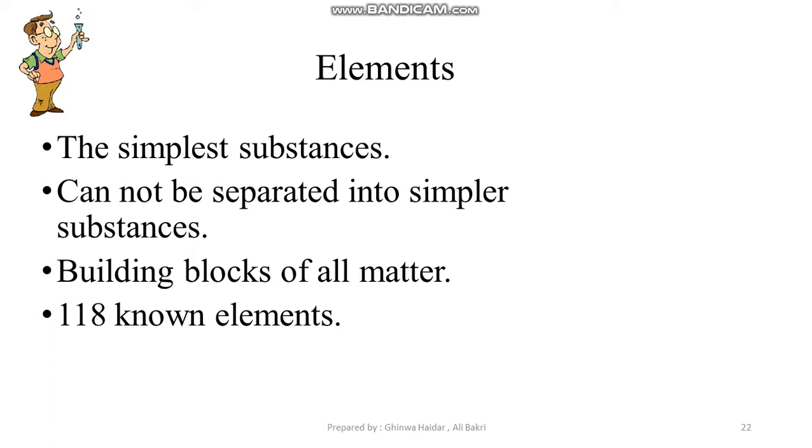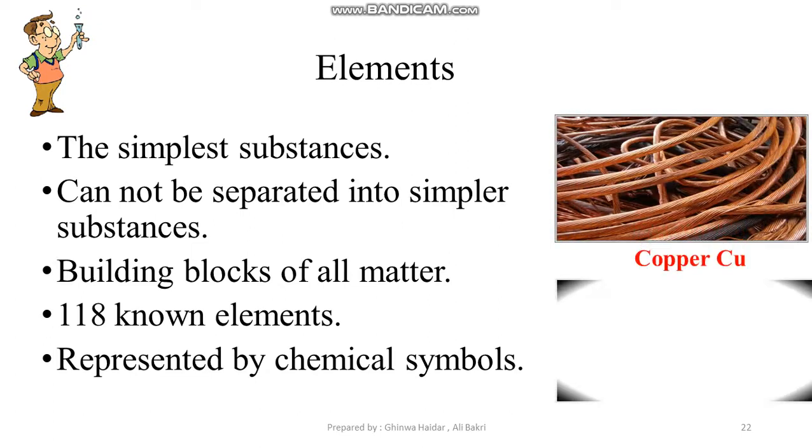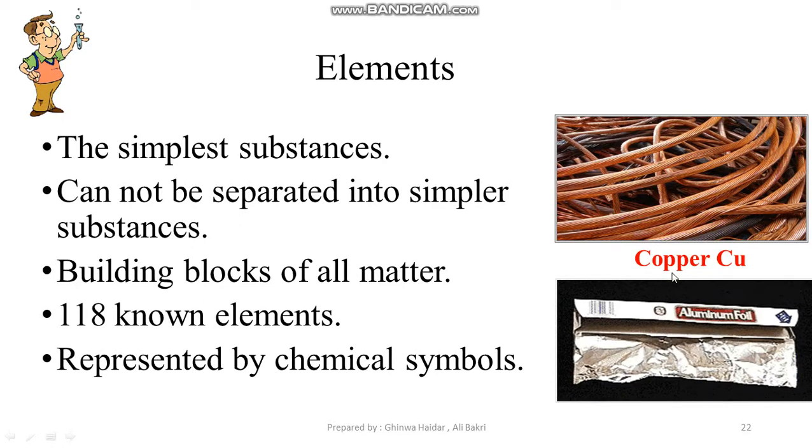We hear about them a lot: carbon, hydrogen, oxygen, nitrogen, aluminum, silicon. How do we represent them in chemistry? You will learn about this later when we take the lesson on chemical language. But you must know that they are represented by symbols. Each element has its own special symbol. For example, copper has the symbol Cu. Aluminum, like the foil that wraps things, aluminum foil, is made of aluminum. The symbol for it is Al.